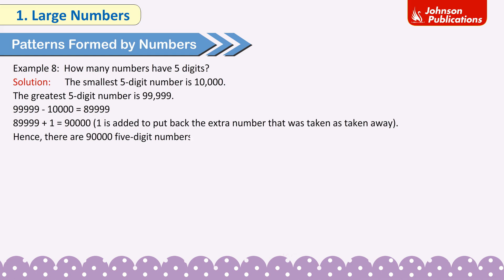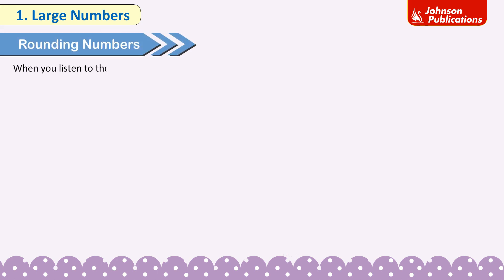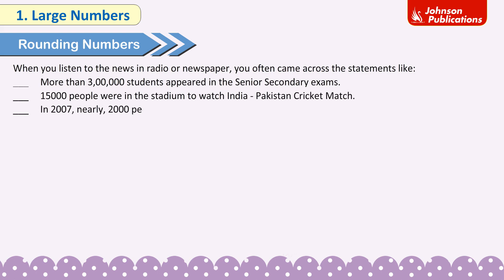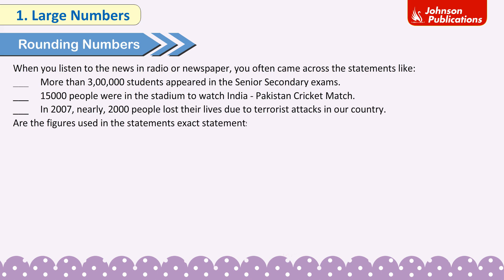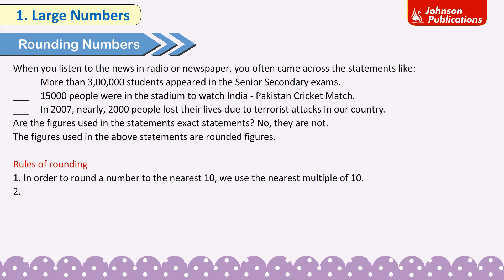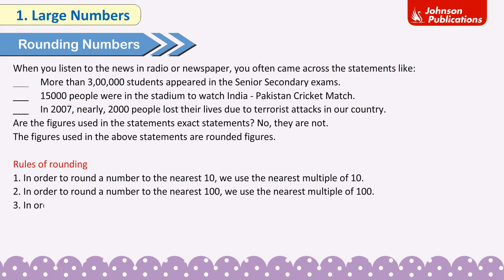Rounding numbers: News reports often use approximate figures, such as 'more than 3 lakh students appeared in the exam' or '15,000 people were in the stadium.' These are rounded figures. Rules of rounding: 1. To round to nearest 10, use the nearest multiple of 10. 2. To round to nearest 100, use the nearest multiple of 100. 3. To round to nearest 1000, use the nearest multiple of 1000.